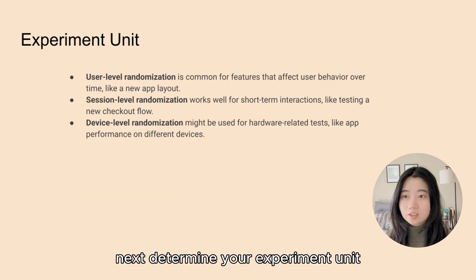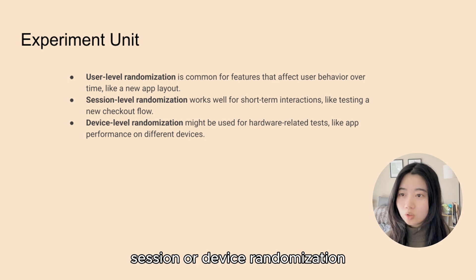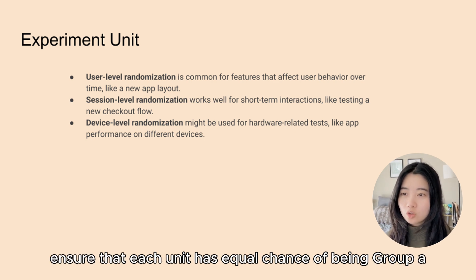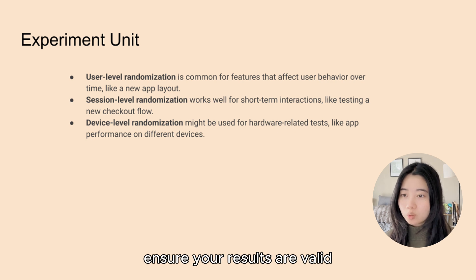Next, determine your experiment unit — the entity you are randomizing, like a user, session, or device. Randomization ensures that each unit has an equal chance of being in group A or group B. This is critical to avoid biases and ensure your results are valid.